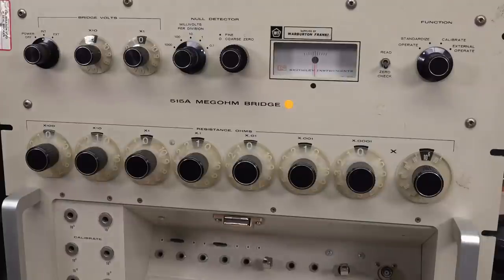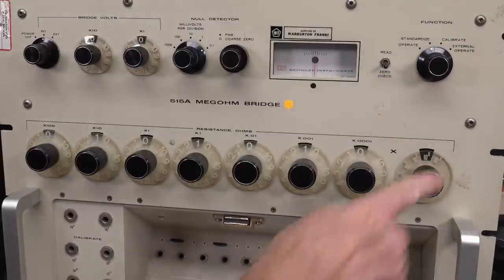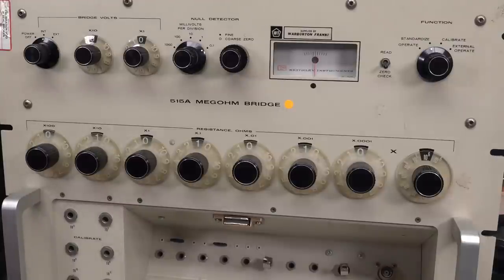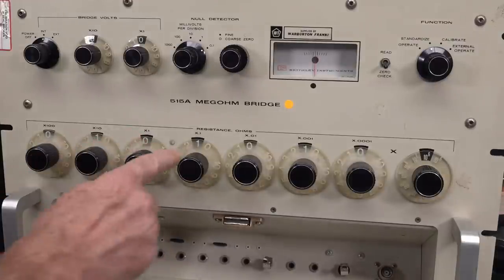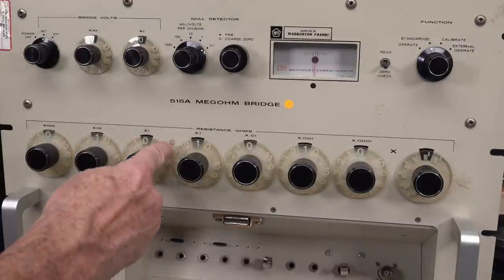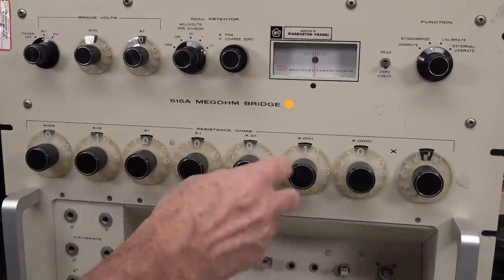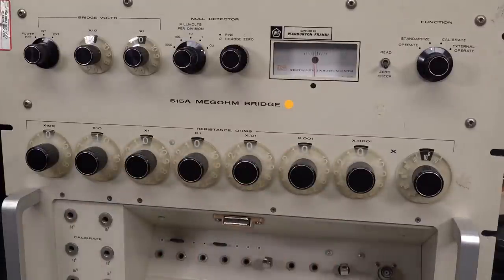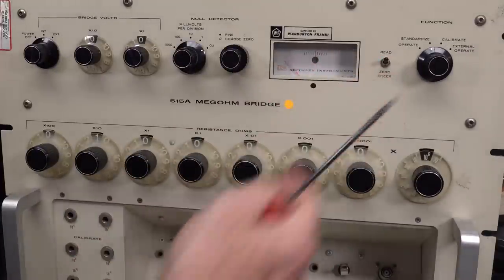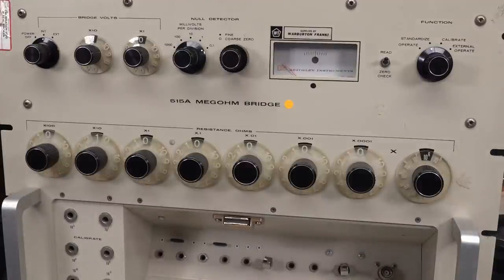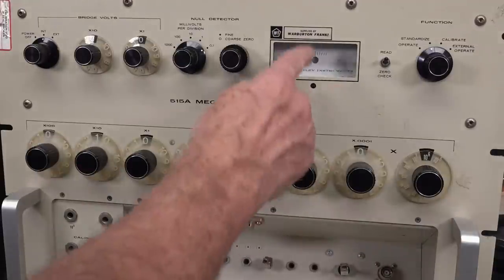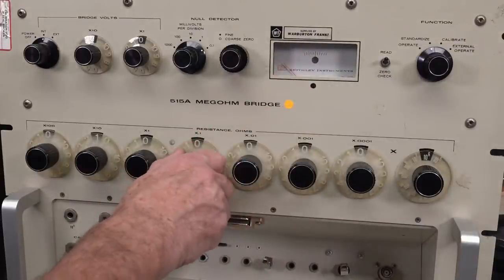Standardizing. So set function switch to standardize. And then multiplier to ten to the sixth. And then set it to exactly ten point, which is what that is. I assume that's supposed to light up. But yeah, there we go. Ten point zero zero. And we'll set that to read position.